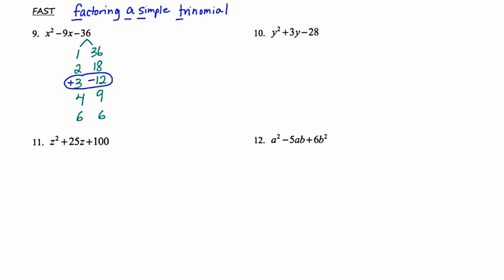How do we translate this into our final answer? It's very simple. I'm going to construct two binomials that will each start with the variable used in the problem, which in this case is x. Each binomial will end with the winning numbers we've picked. So the final answer is (x + 3)(x − 12). When you're done and not completely certain, you could always FOIL to check.